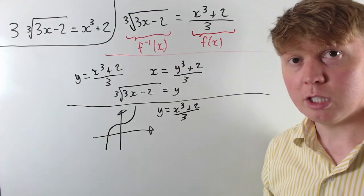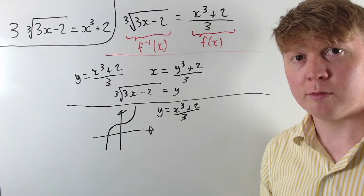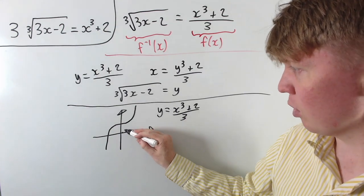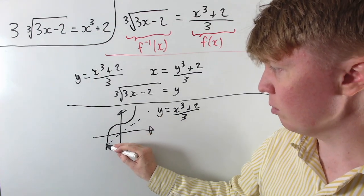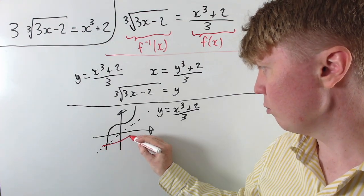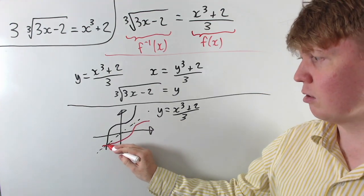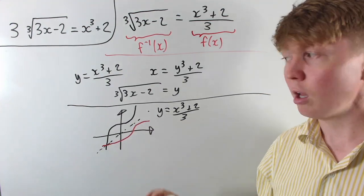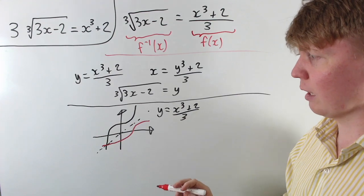And then if we wanted to draw the inverse function on the same graph, then this would just be a reflection in the line y equals x. So here we've got the line y equals x, and then we reflect this, so we get a similar looking picture reflected like this, and you can see that the two intersect each other on this line y equals x.